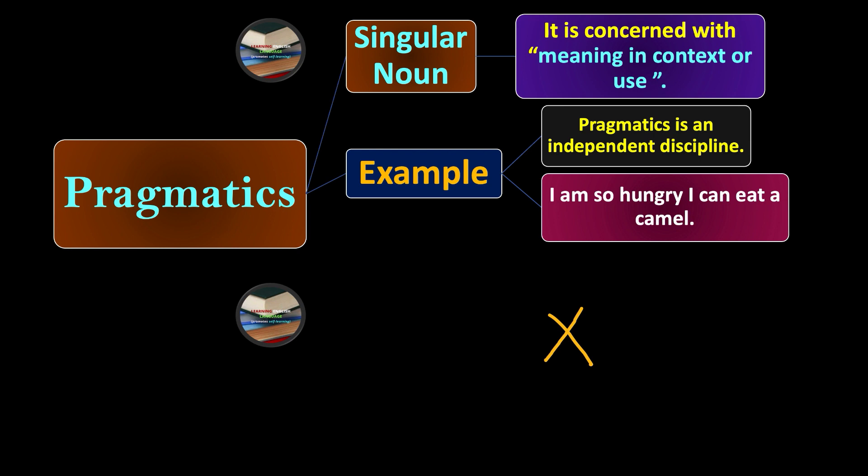Look at this example—can I really eat a camel even though I'm hungry? Of course I cannot, but the context in which this sentence is used gives you another sense of meaning. What is the meaning? That the person is really very hungry—so much so that he can eat a camel.